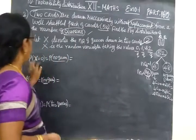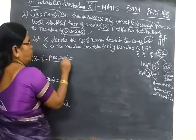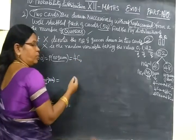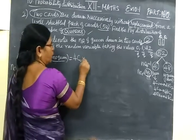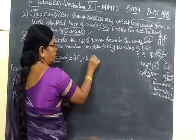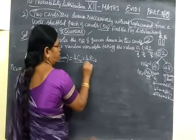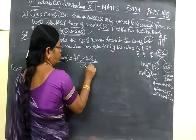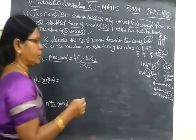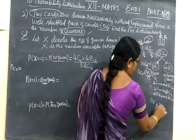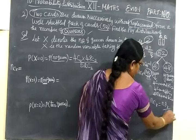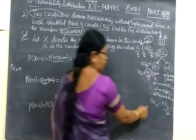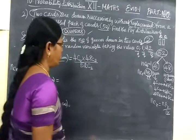First we write P of X equal to 0, that means no queen. No queen in the 4 queen cards, then 2 cards will be in 48. So 48C2 divided by total number, we are writing 52C2. NCR equals N factorial over R factorial times N minus R factorial.